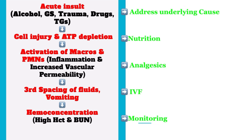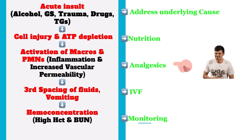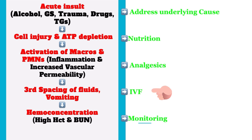Let's understand the treatment from the pathophysiology. From the acute insult — alcohol, gallstones — we need to address the underlying cause. From cell injury and ATP depletion, we need nutrition. The inflammation causes pain, so we need analgesics. And when there is third spacing of fluids, vomiting, and volume loss, we need IV fluids.